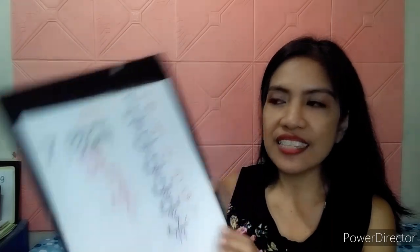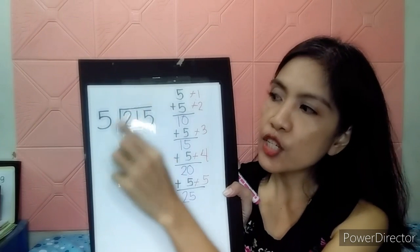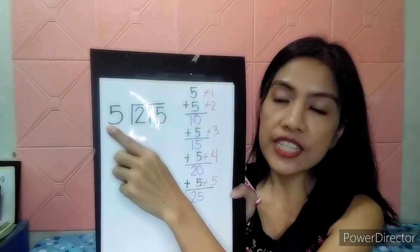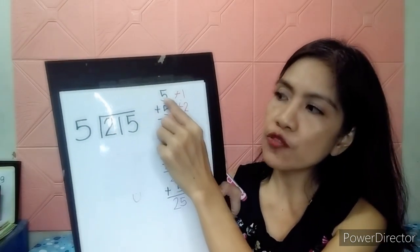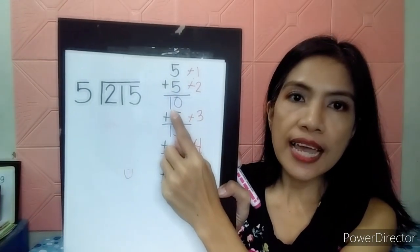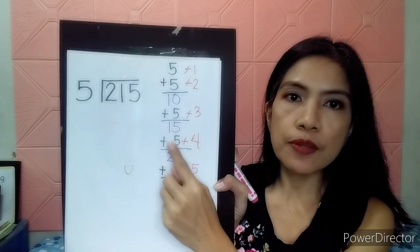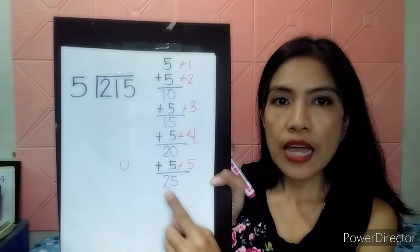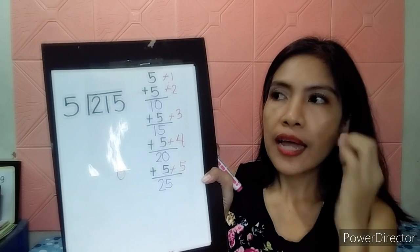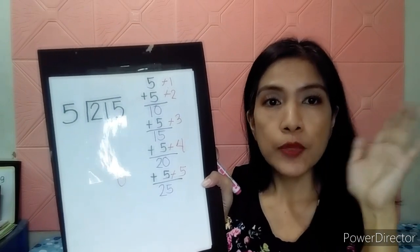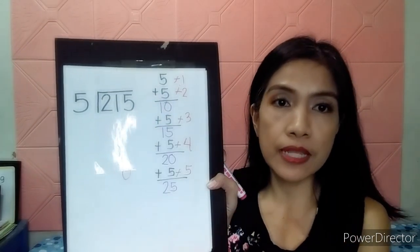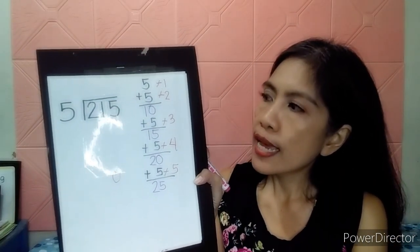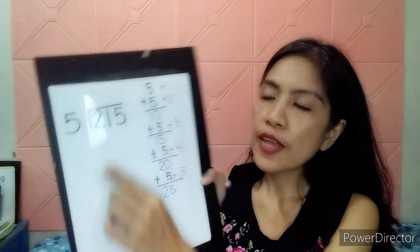Let's have another drill. Again, I asked her, what is your divisor? She said to me, it's 5. So, she did the repeated addition of 5. So, 5 plus 5 equals 10. 10 plus 5 is 15. 15 plus 5 is 20. 20 plus 5, 25. So, do not let your kids do repeated addition up to 10. Not unless necessary. Kasi para mas tipid din sa oras.